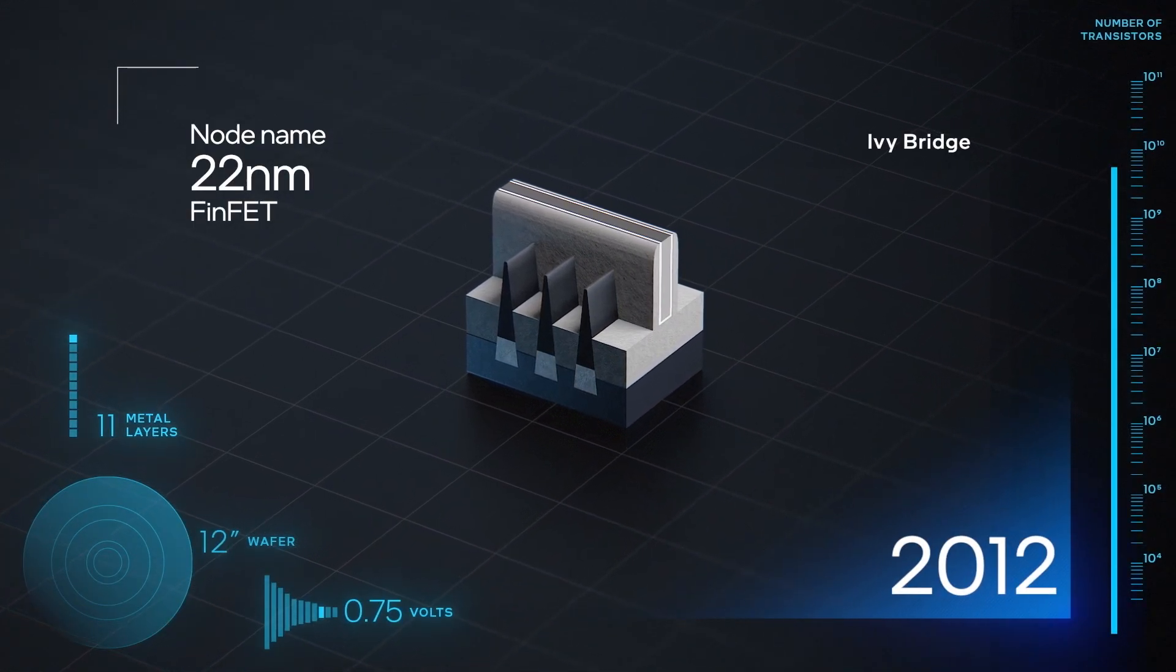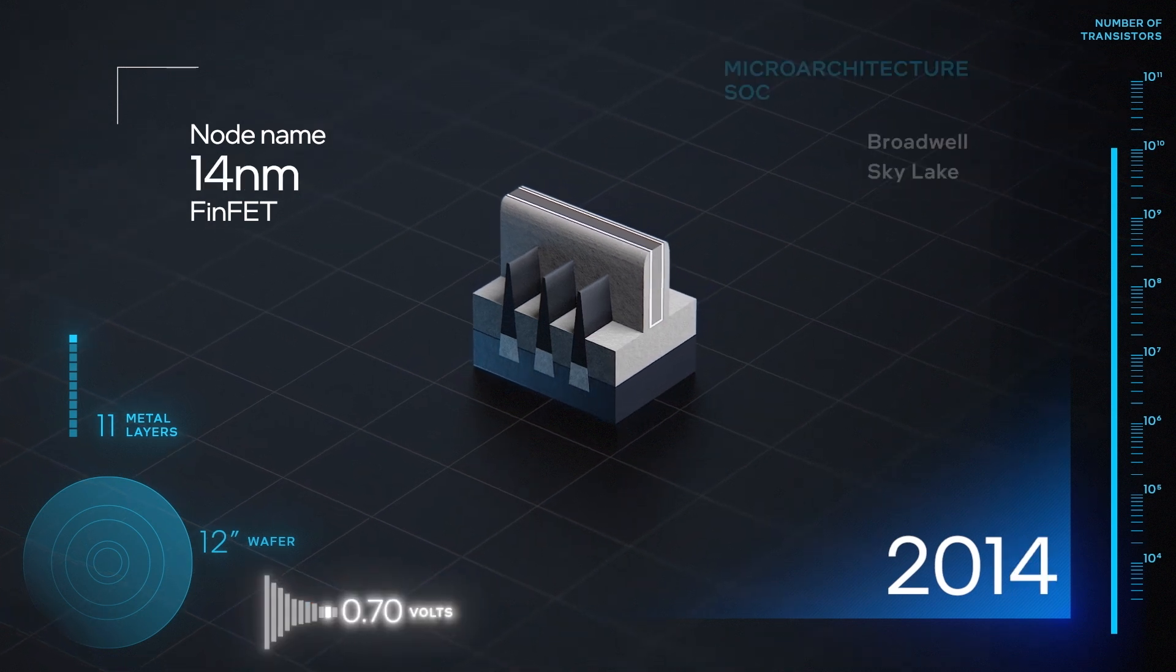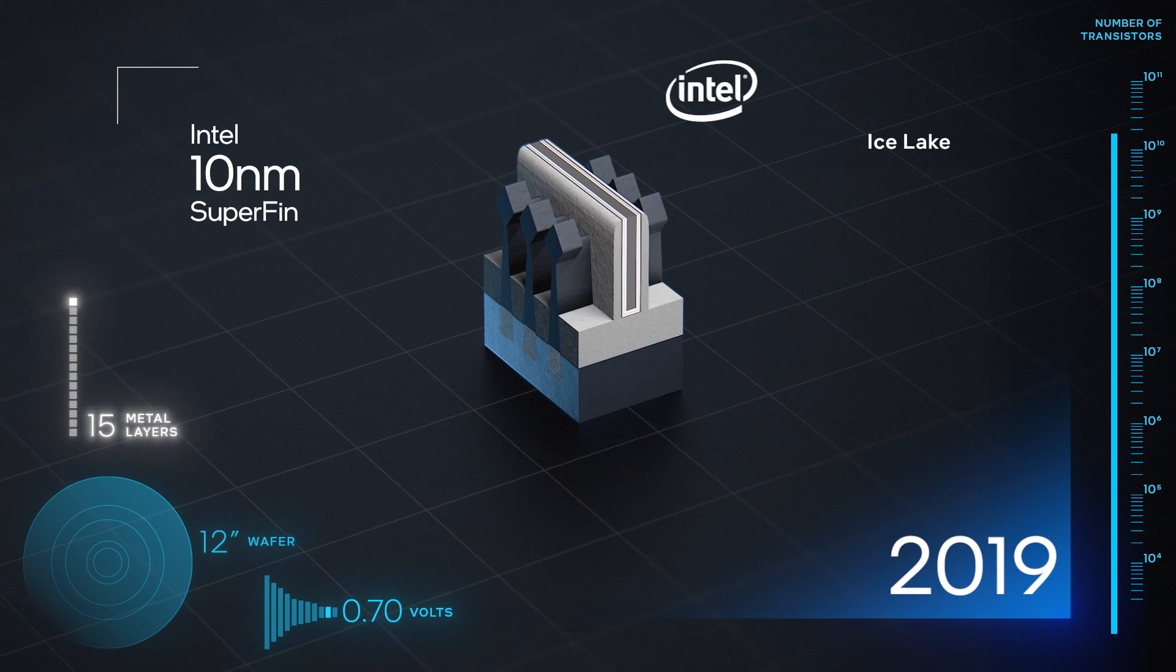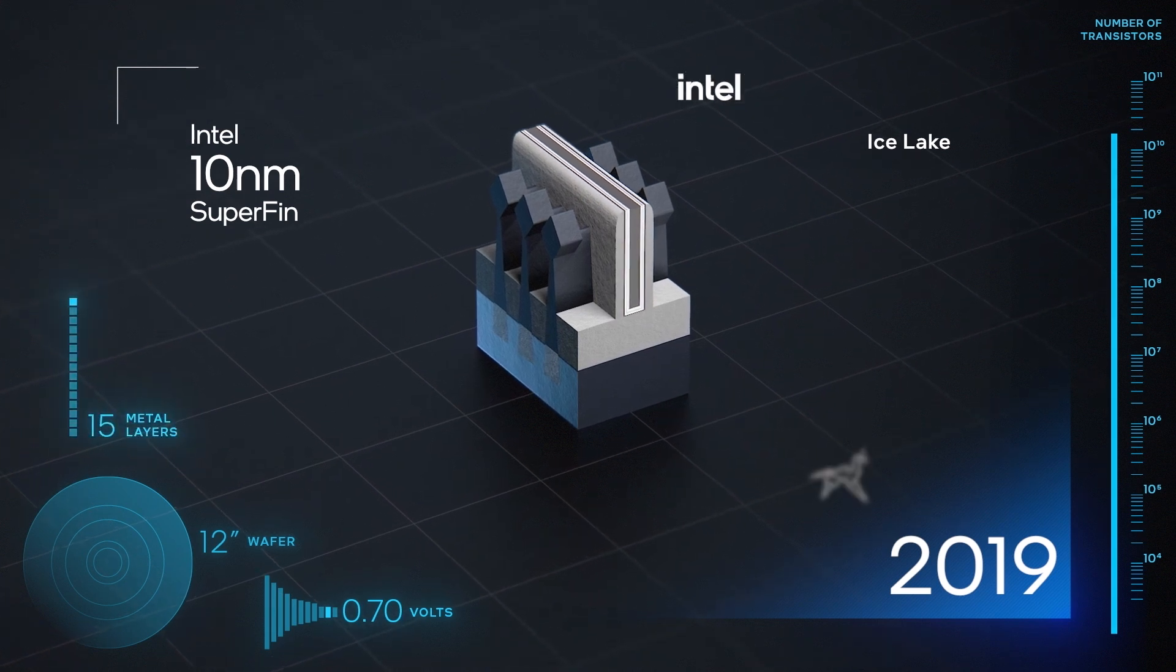Transistor node names, long tied to the 2D gate length, now reflect a range of new factors, including smaller features as well as new processes and technologies.